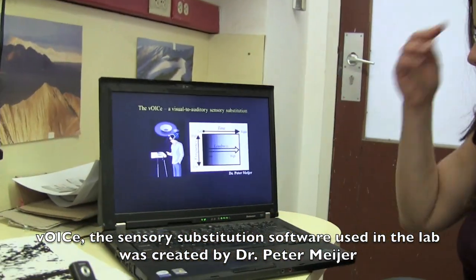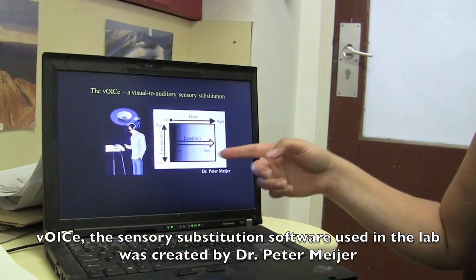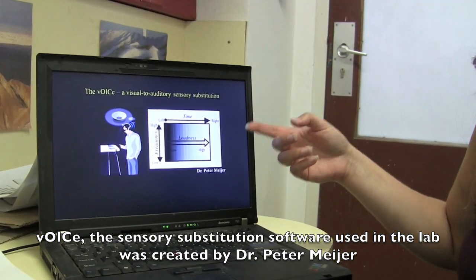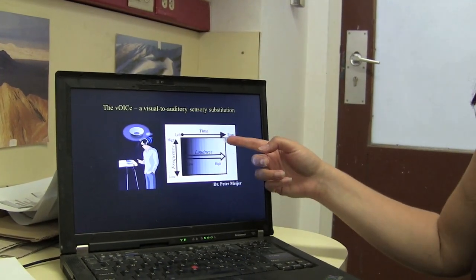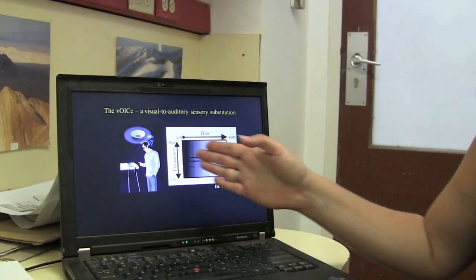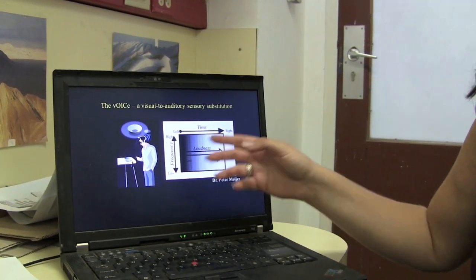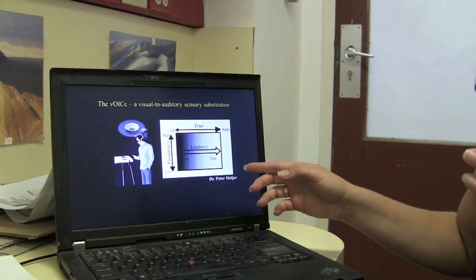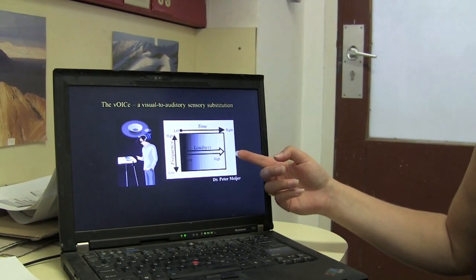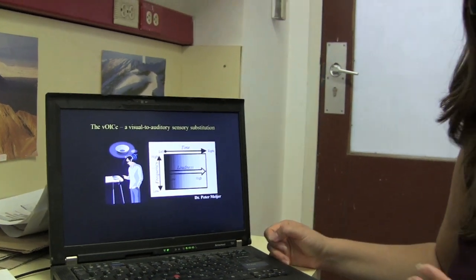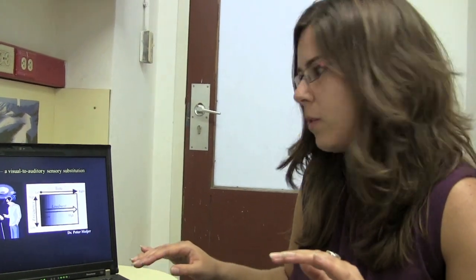In each image the vertical axis is encoded by frequency. So something that's higher up in the image gives a higher frequency tone. The horizontal axis is encoded by time. So the image is scanned from left to right, and you'll hear first things that come from the left side of the image and then things that come from the right. And the brightness of each pixel is encoded by the loudness of the sound. So something that's very bright or white would give a strong sound and black would give zero sound.